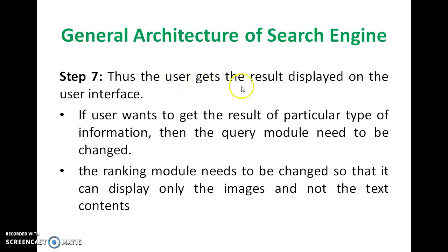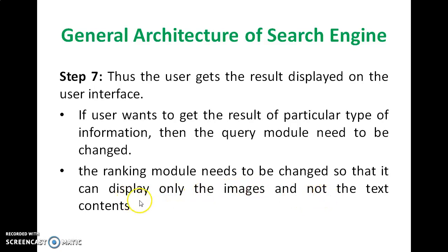Step 7: the user gets the result displayed on the user interface. As a result of the query, the user will get the result displayed on the user interface. If the user wants to get a particular type of information, then the query module and ranking module need to be changed so that it can display only images and not text content. Based on whatever query the user is submitting, the query module and ranking module have to be changed accordingly.